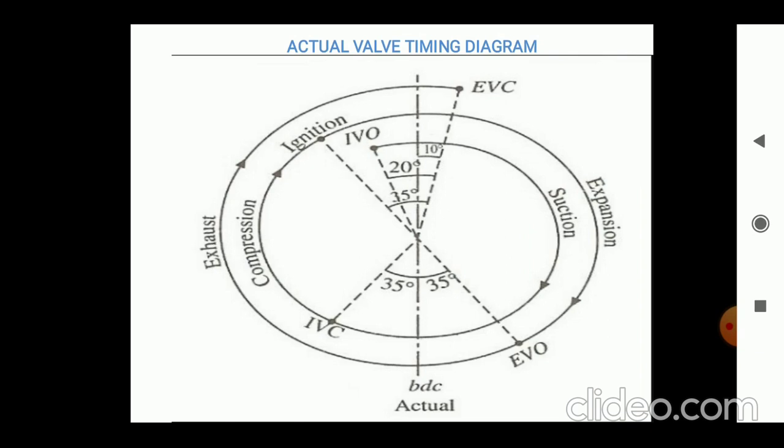So friends, in front of your screen, you can see the actual valve timing diagram. The central line shown in front of you divides clearly the circle of 360 degrees into two 180-degree part circles. On the right-hand side of your screen, you can see the suction and expansion stroke, while on the left-hand side of your screen, you can see the exhaust and compression stroke. The dotted lines showing IVC, EVO, EVC.